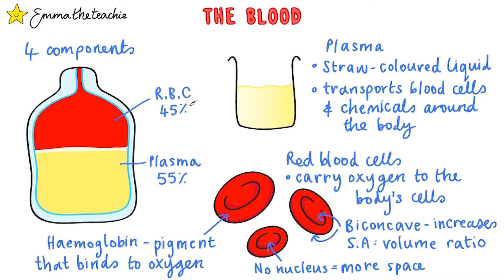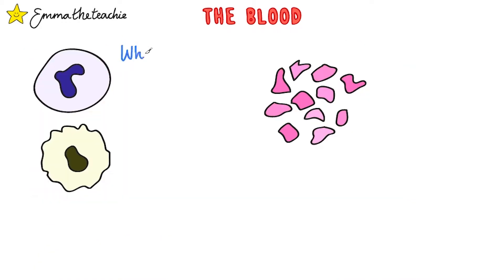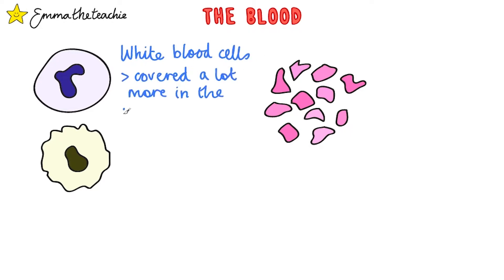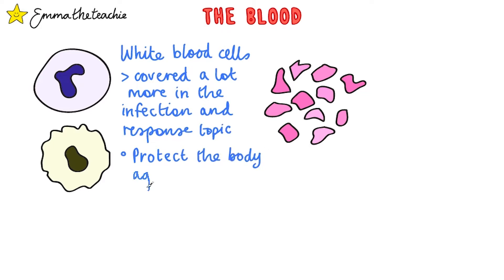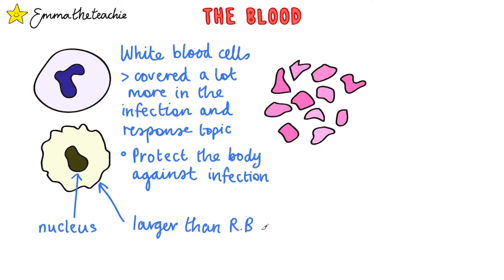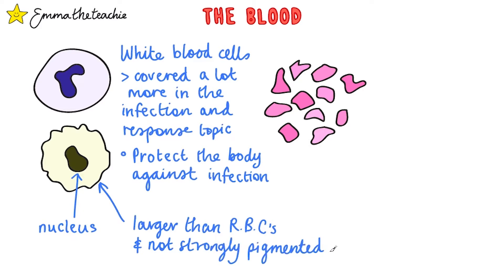Red blood cells make up around 45% of the blood, and the remaining less than 1% are white blood cells and platelets. White blood cells are covered in the infection and response topic — you'll go over them in a lot more detail then. So for now, we'll just cover their main function, which is to protect the body against infection. Unlike red blood cells, they do have a nucleus and they're normally larger. They're also not as strongly pigmented, so if you're asked to identify them in a photograph, they'll just be the colour of whatever stain has been used.